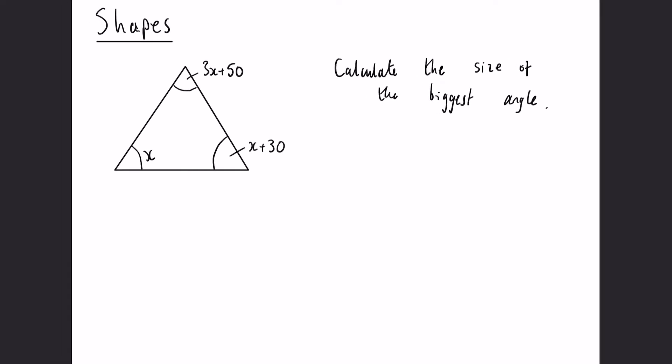So this is another common example using shapes this time. So you could have a hexagon, a pentagon, quadrilateral or a triangle. They're all fairly common. But we're going to use a triangle here. So we need to calculate the size of the biggest angle.